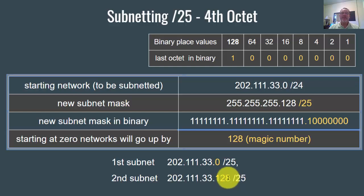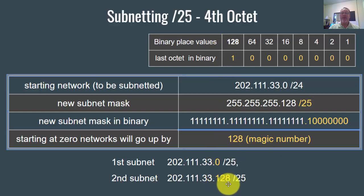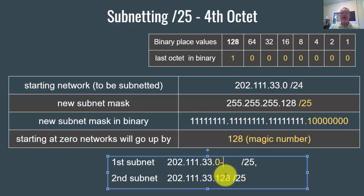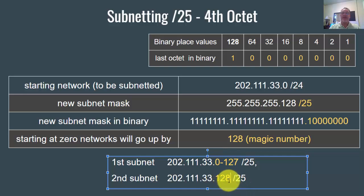So essentially, if you subnet this network with a slash 25, you've created two subnets: a zero subnet and a 128 subnet. The magic number is 128, the networks go up by 128, and you have seven zeros in the host bits, giving you 128 minus two hosts in each network. The first network goes from zero to 127, where zero is the network address and 127 is the broadcast. The second subnet goes from 128, the network address, up to 255, the broadcast address.